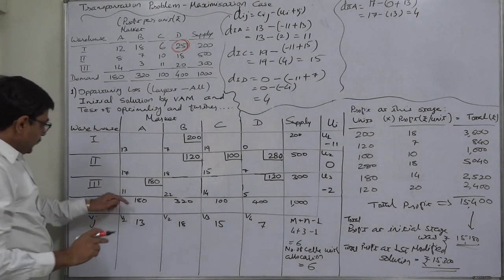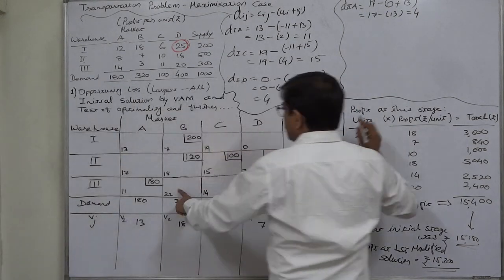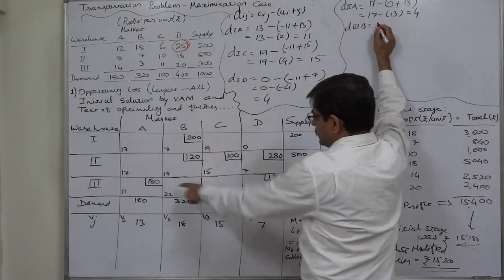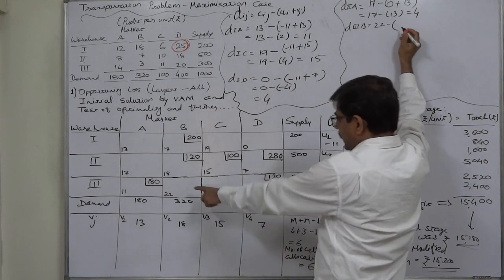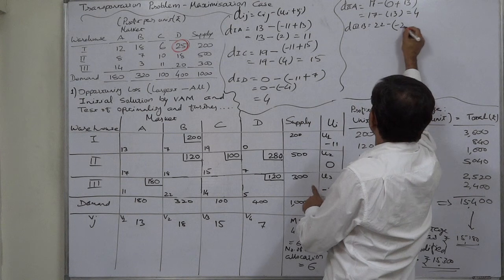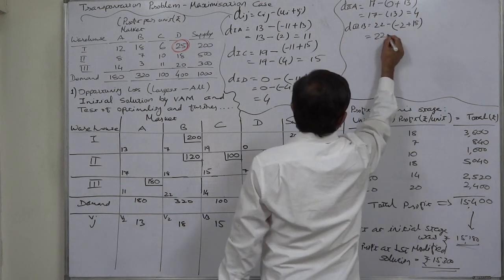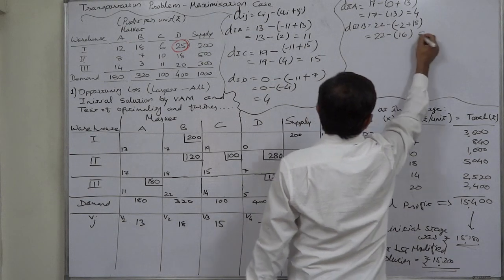In the third row, the empty cell is d3b. Relevant c is 22 minus, according to formula, relevant u is minus 2 plus relevant v is 18. 22 minus 16, so it comes to positive 6.